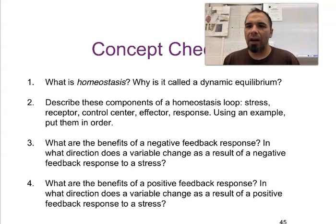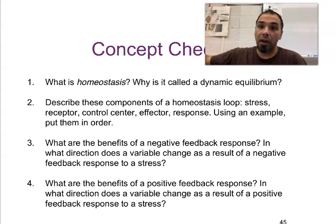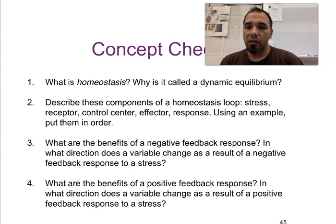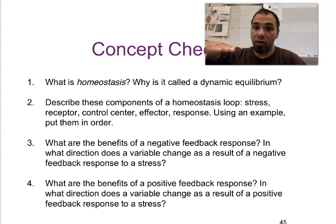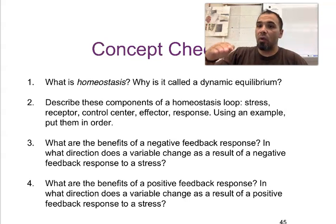So, here's our concept check — you may want to pause here and answer these. What is homeostasis? Why is it called dynamic equilibrium? Homeostasis is just biological balance. It's dynamic equilibrium because dynamic means moving — it's constantly maintaining equilibrium, going along that set point. Describe the components of the homeostasis loop — just that picture that you drew. The benefits of a negative feedback mechanism: they allow you to maintain life, they help regulate a system. In what direction does a variable change as a result of negative feedback? It's trying to reduce it down, bring it back to a set point. Positive feedback — you're trying to get a threatening situation over quickly, going away from the set point.